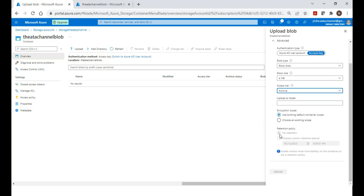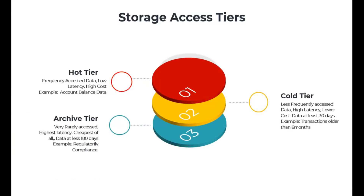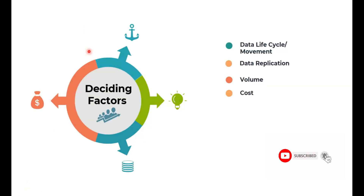You can also see different retention options there. So at a high level, we understood what the different access tiers are and how to use them based on different use cases, business scenarios, cost, and the various deciding factors we discussed. Hope this video was useful in understanding these differences. Thanks for watching.